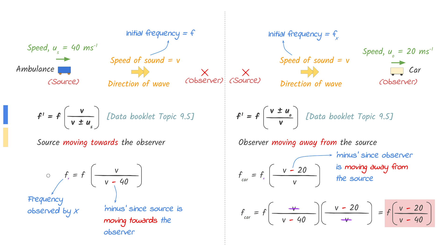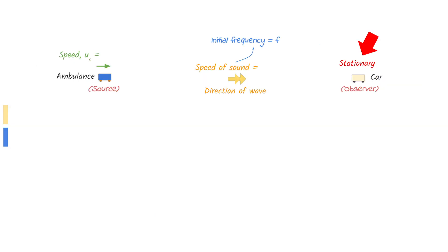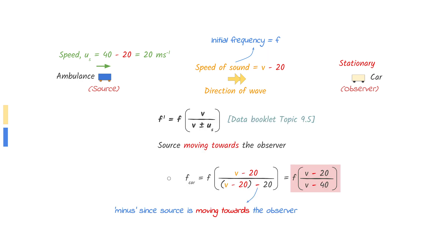The other way of solving this question is to use relativity. Imagine being the driver of the car — you are stationary relative to the car because you are moving with it. The speed of the ambulance relative to you would be 40 minus 20, giving 20 meters per second. The speed of sound relative to you would be v minus 20. Use the equation for a moving source and put in the correct values to find the same answer.